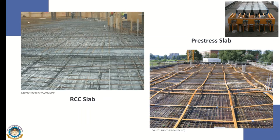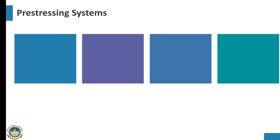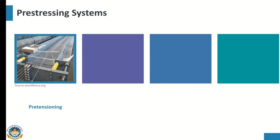Now let's look into the pre-stressing systems — how they are done. There are generally four types of pre-stressing systems. The first one is pre-tensioning, where tension is provided with the tendons before the concrete is poured.